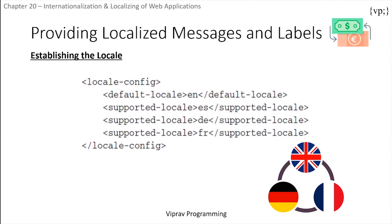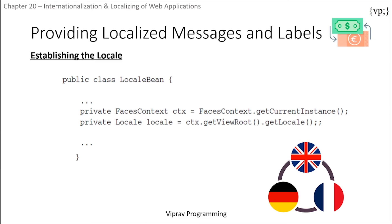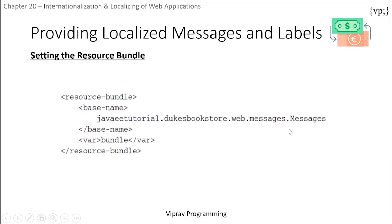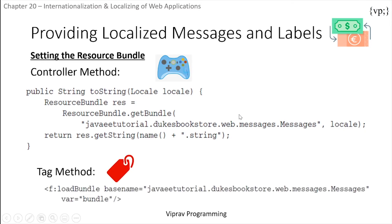To establish a locale, you can either implicitly get the locale using get locale, or allow the user to explicitly set it using the set locale tag. This example sets the default locale to English and the supported locales to Spanish, German, and French. A Java class can retrieve the locale using the getLocale method. The resource bundle is set inside the configuration file, which is faces-config.xml, and you can either have the controller retrieve the resource bundle or use a tag that loads it.